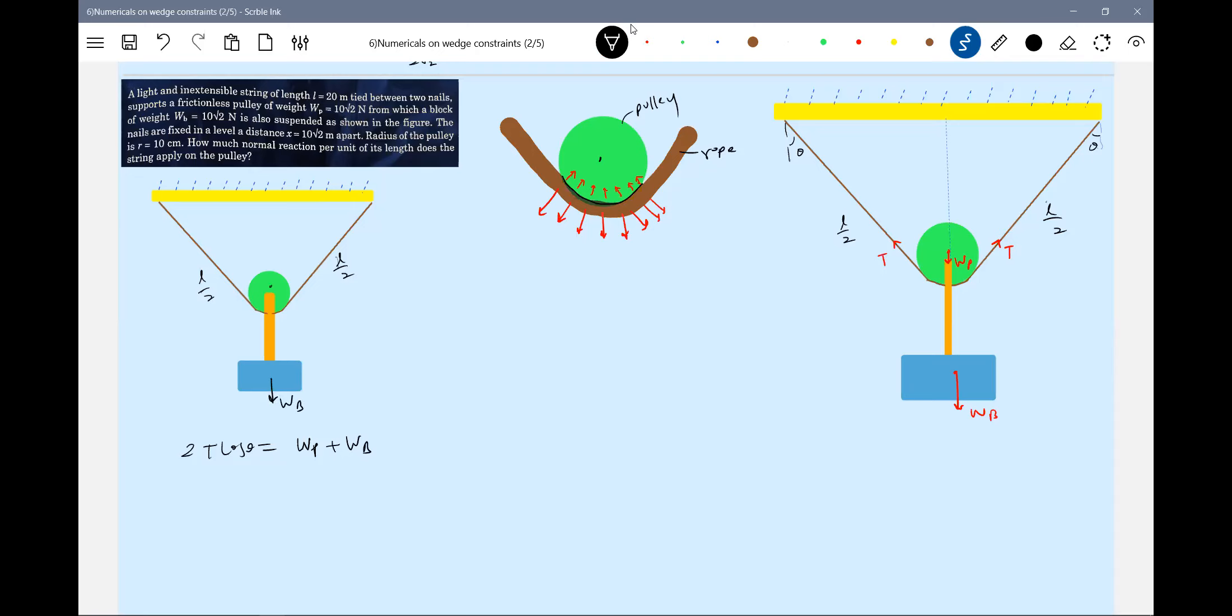Weight of the block acts here. Weight of the pulley, there's tension. All forces acting between the pulley and rope will be internal because I'm defining the pulley, block, and this part of the string as one system. We know weight of the pulley and block, but we don't know cos theta.